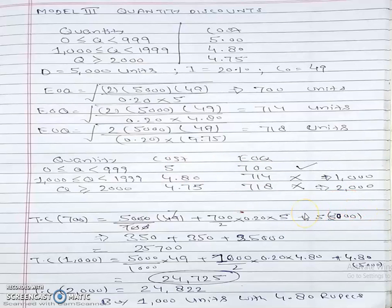The C times D factor must be taken into consideration because this model involves quantity discount. C is the per unit cost, which is 5, and D is 5,000. This value comes out to be 25,700.